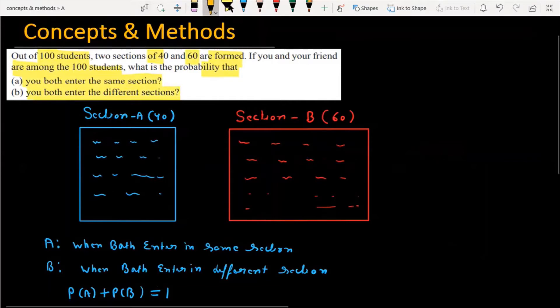So let's see how we will solve this problem. First of all, I will explain the question. We have a total of 100 students and we will make two sections of them. Section A is the first section and this section is B. Section A capacity is 40 students, section B capacity is 60 students.